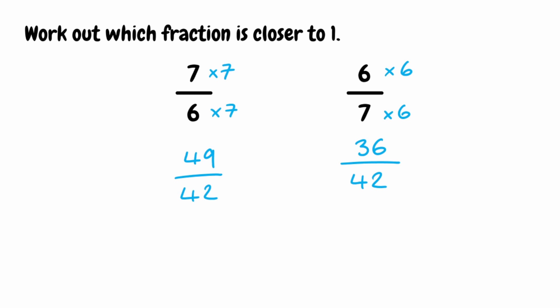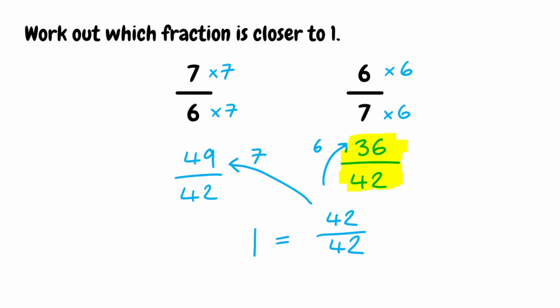Now we have our two equivalent fractions and we want to see which is closer to 1. Working with the common denominator of 42, 1 would be equivalent to 42 over 42. We can see that 49 over 42 is 7 away on the numerator, and 36 over 42 is only 6 away. So 36 over 42 is our closest fraction to 1, and using the original fraction given, the answer is 6 sevenths.